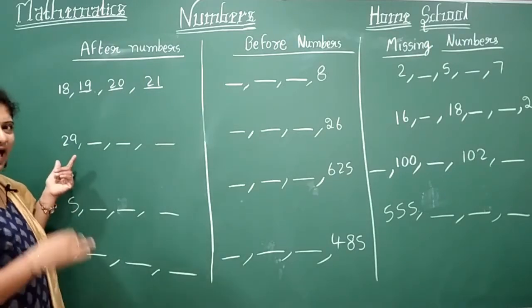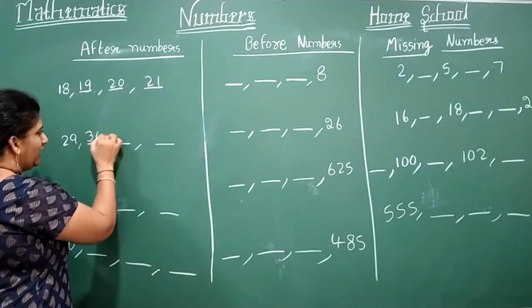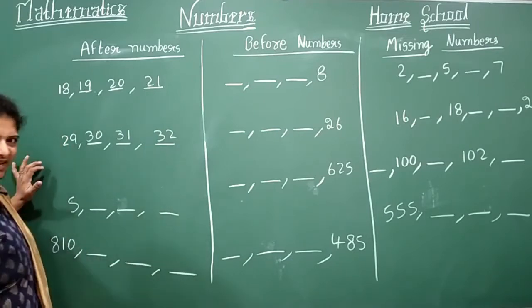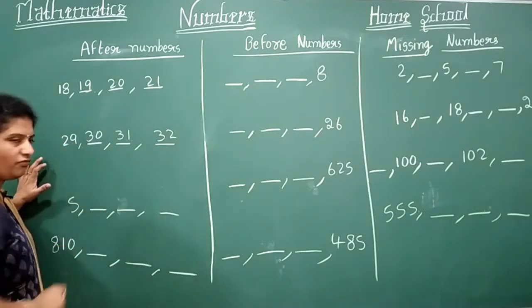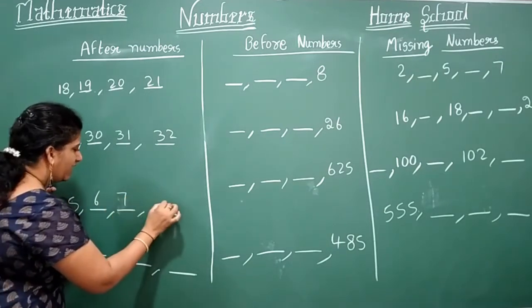29 after. After 29, what do you get? 30, 31, 32. It's very easy, no? So once again, after numbers, next numbers. So 5, after 5: 6, 7, 8.